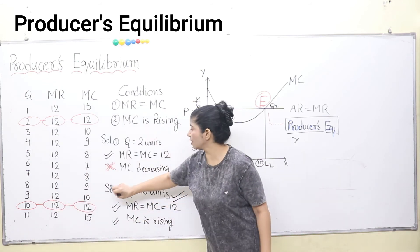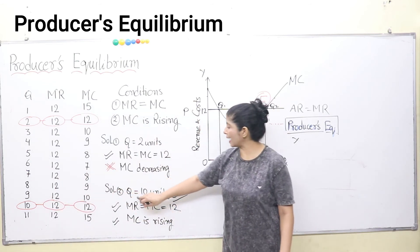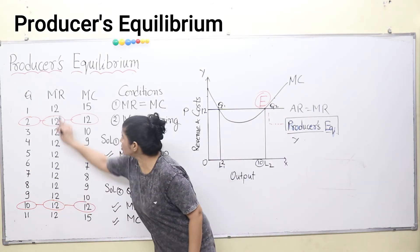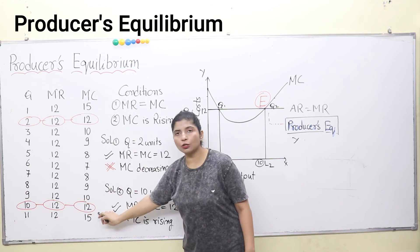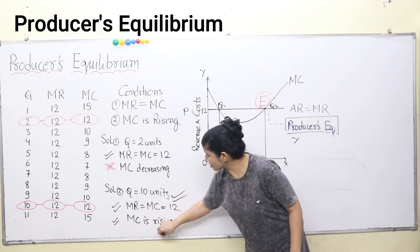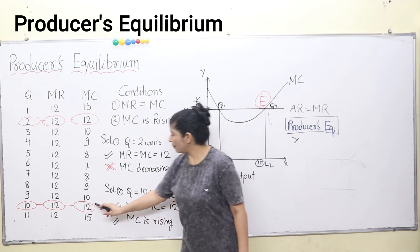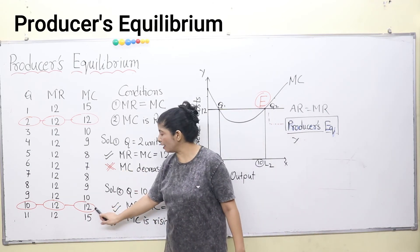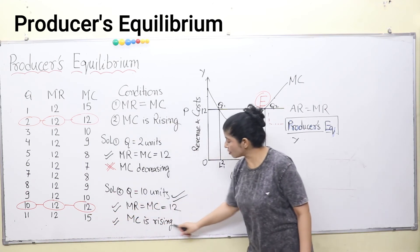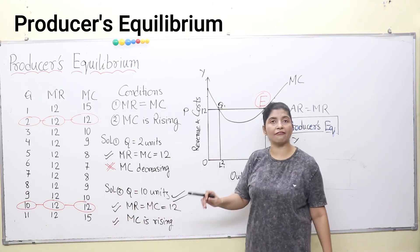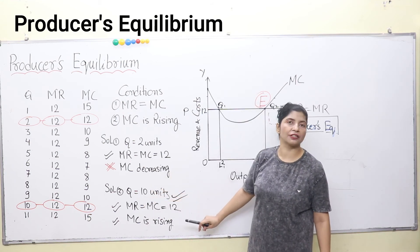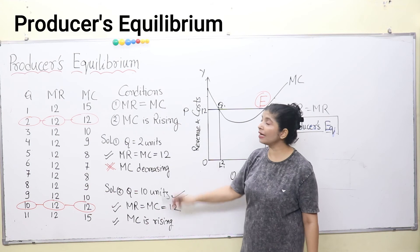In case number two, at quantity 10 units, marginal revenue equals 12 and marginal cost is also 12, so the first condition is fulfilled. Here marginal cost is rising — thereafter it rises to become 15 — so the second condition is also fulfilled. Both conditions are satisfied, and we accept this as the correct solution for producer's equilibrium.